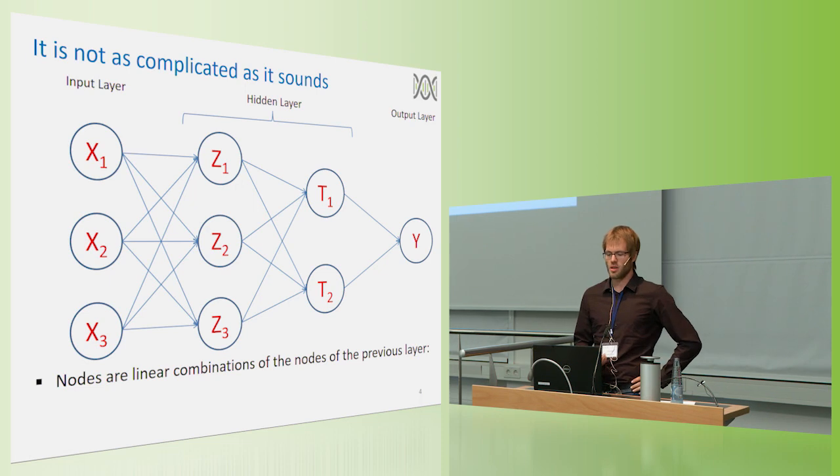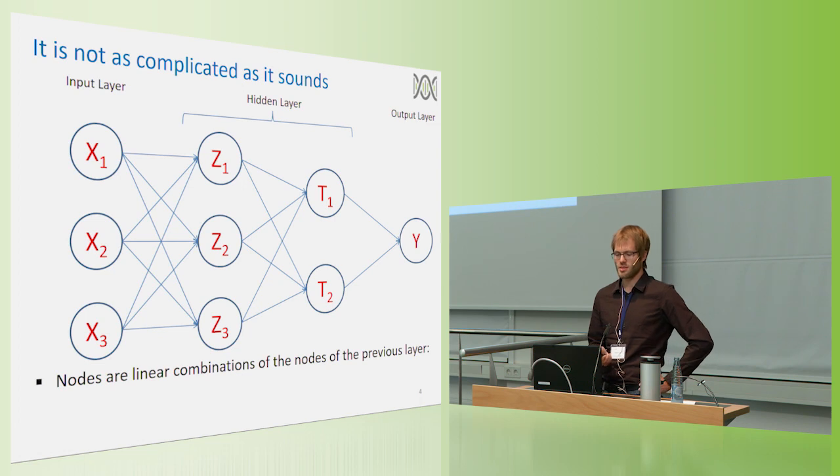Everything in between is a layer structure which connects the input to the output. And typically what's done is that each node of a layer is just a combination of the nodes of the previous layer. For example, the nodes in the Z layer would just be a combination of the input layers. So Z1 is the combination of X1, X2, X3, times some parameter one wants to optimize.